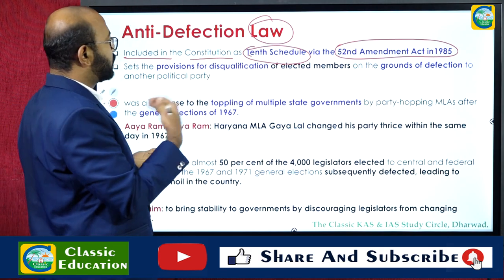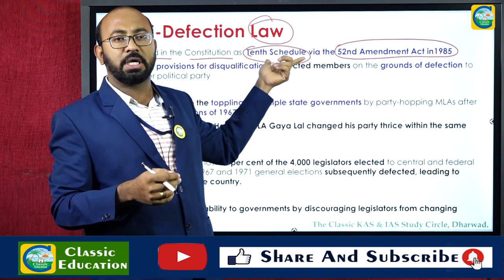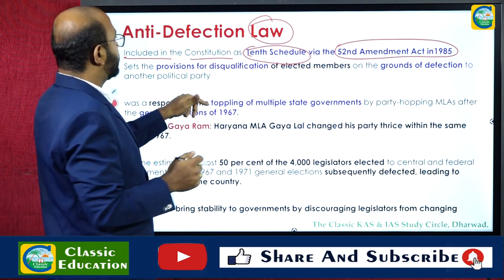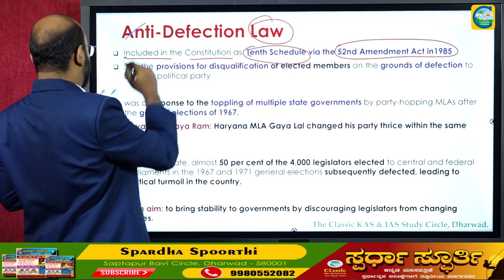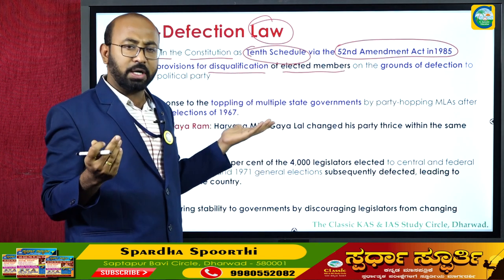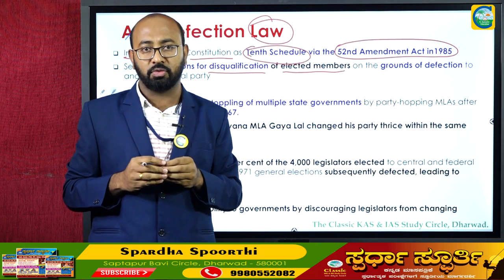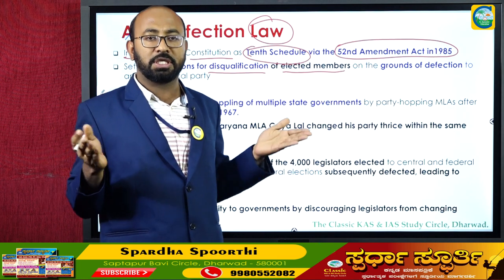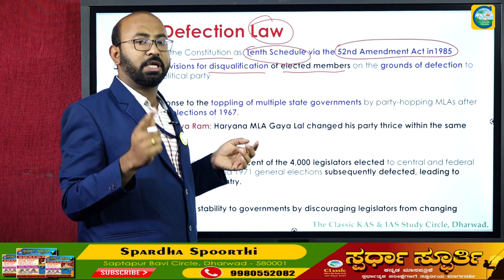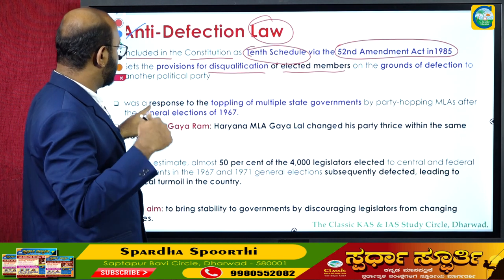All provisions of the anti-defection law are included in the Constitution's 10th Schedule. This law sets provisions for the disqualification of elected members — MPs as well as MLAs — elected to various legislative assemblies or to Parliament. It was a response to the toppling of multiple state governments by party-hopping MLAs after the general elections of 1967.